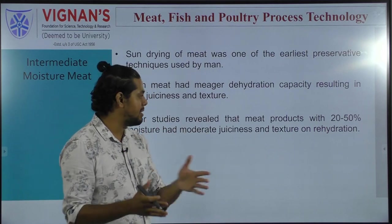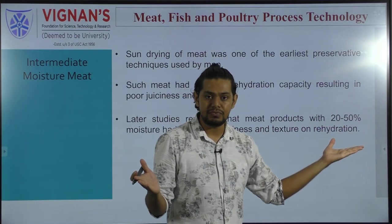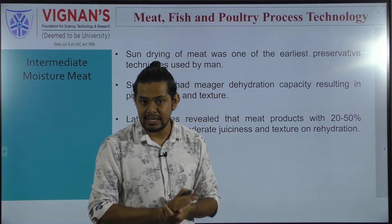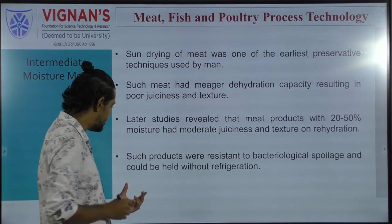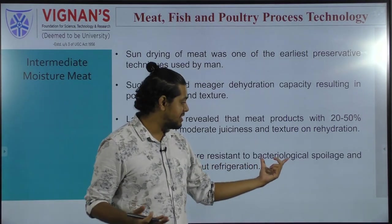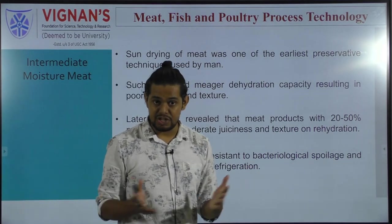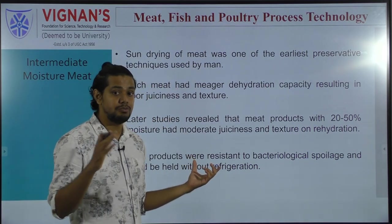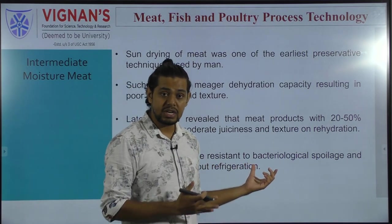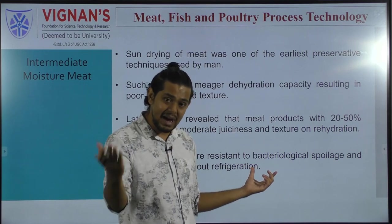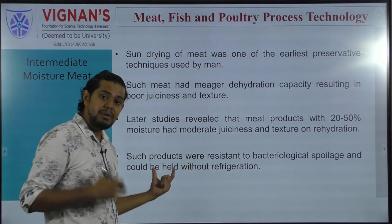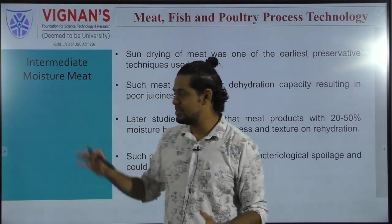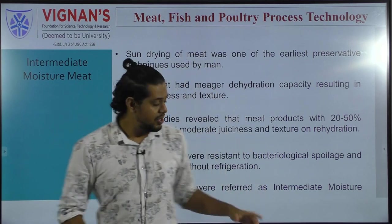When drying the product, a moisture content of anywhere between 20 to 50 percent must be maintained. Upon rehydration, the meat will regain its juiciness as well as texture, which increases palatability. Such products are also resistant to bacteriological spoilage and can be held without refrigeration, reducing capital costs. These are the advantages of intermediate moisture meat.